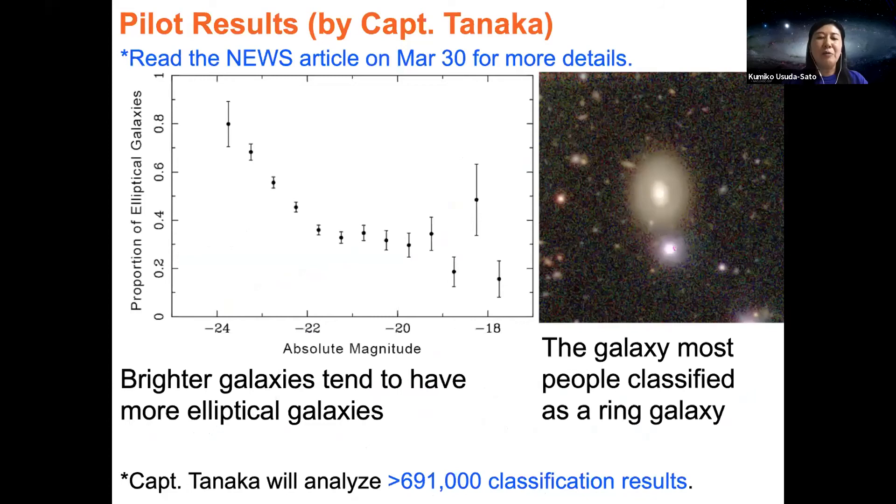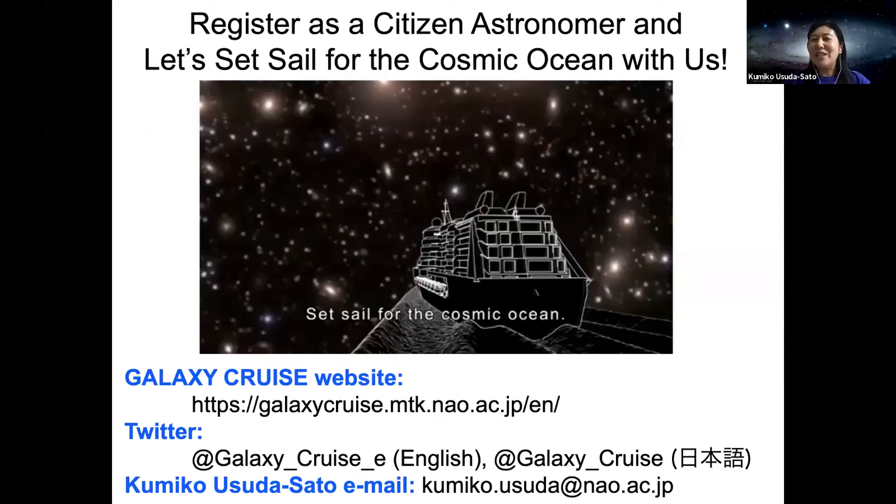We have some pilot science results. Based on past observational data, we know brighter galaxies tend to have more elliptical galaxies. Look at this graph—the left smaller number is brighter galaxy. This is the proportion of elliptical galaxies. One means 100% elliptical. We can see this tendency: brighter galaxies have more elliptical galaxies. This galaxy is a ring galaxy. Many astronomers classified it as a ring galaxy, and Captain Tanaka checked—this is really a ring galaxy. We have received more than 691,000 classification results, so we have to start analyzing.